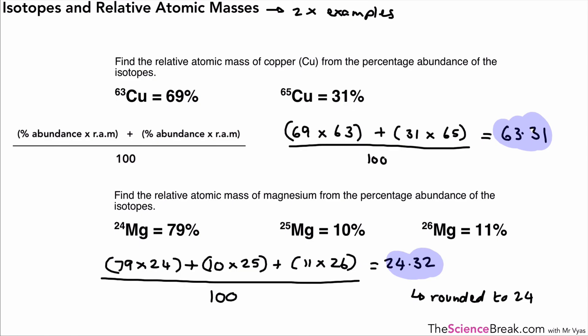That's our definition of isotopes—very important that you know this in the detail we've covered, and how we calculate relative atomic masses based on the abundance of isotopes.